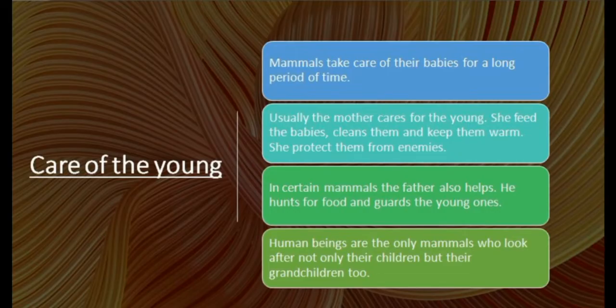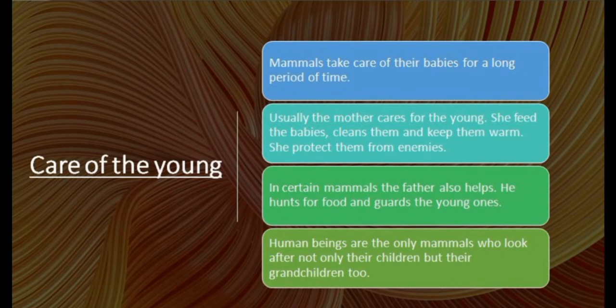Mammals take care of their babies for a long period of time. Usually the mother cares for the young — she feeds the babies, cleans them, keeps them warm, and protects them from enemies. In certain mammals, the father also helps by hunting for food and guarding the young ones.